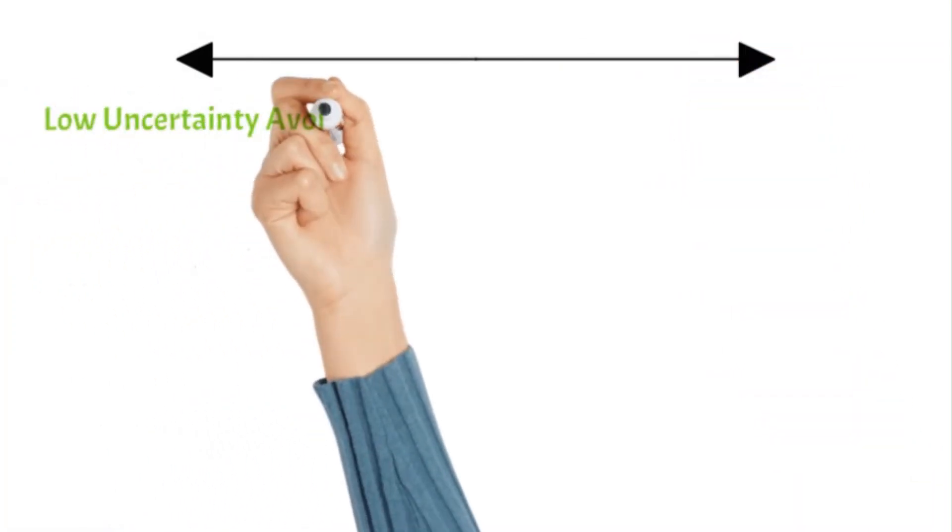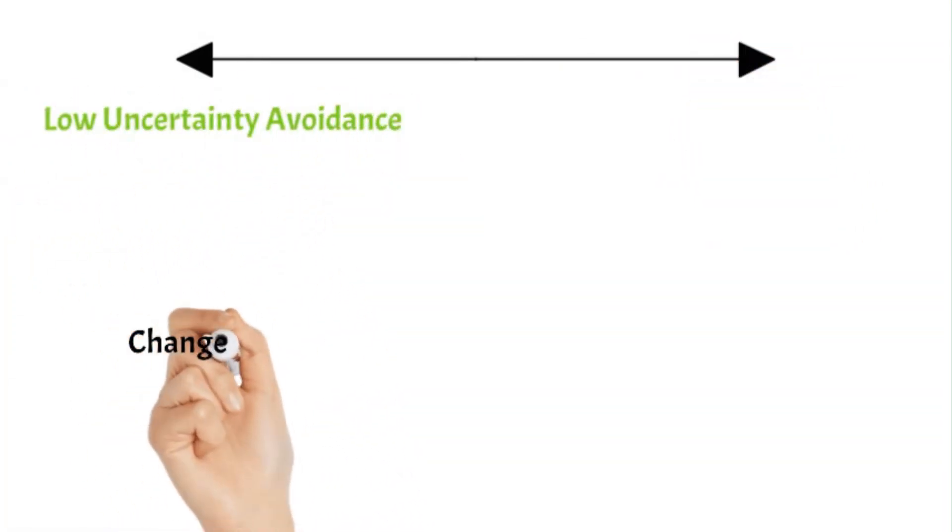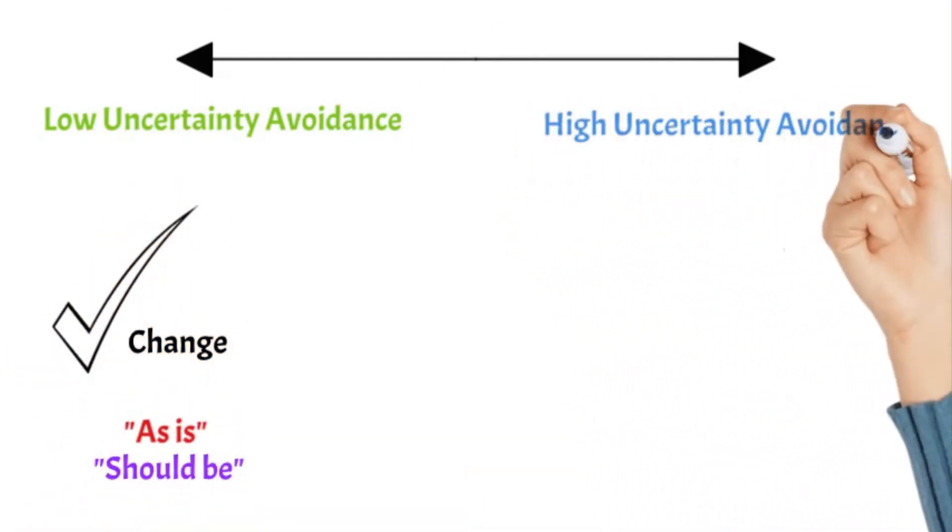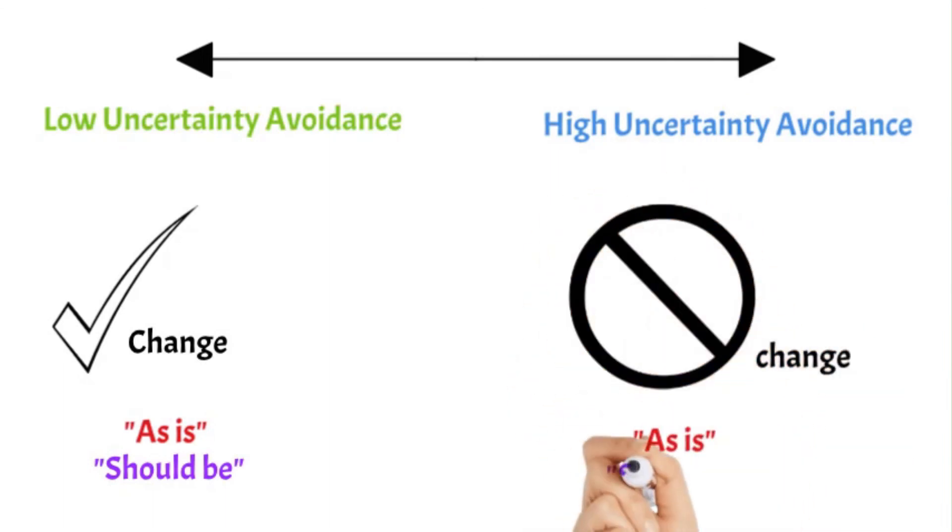Uncertainty avoidance is the degree to which a society, organization, or group relies, and should rely, on social norms, rules, and procedures to alleviate unpredictability of future events.